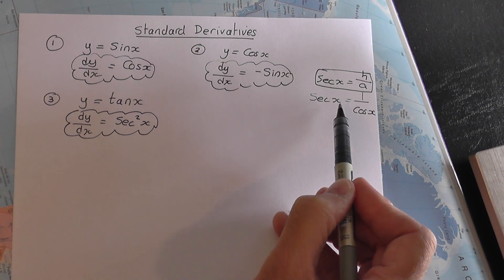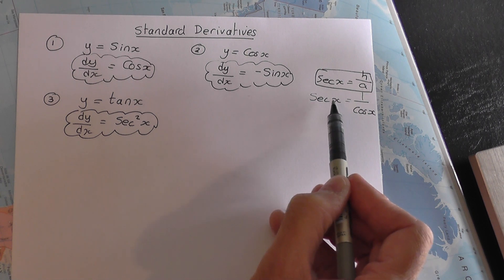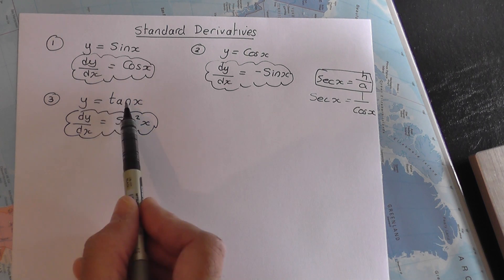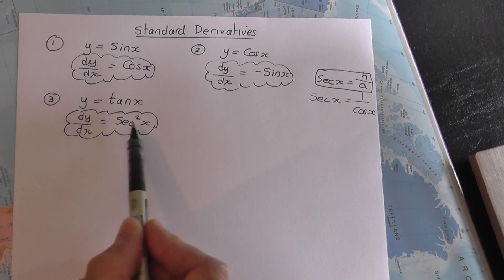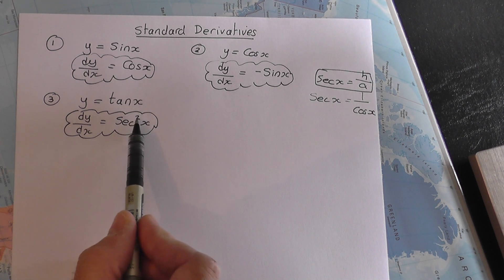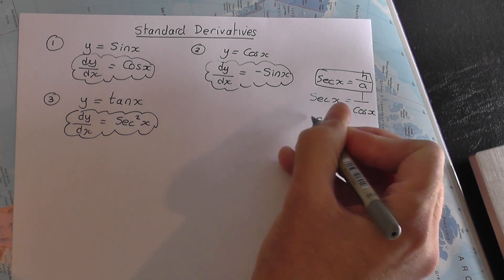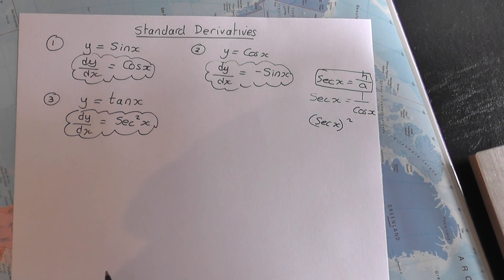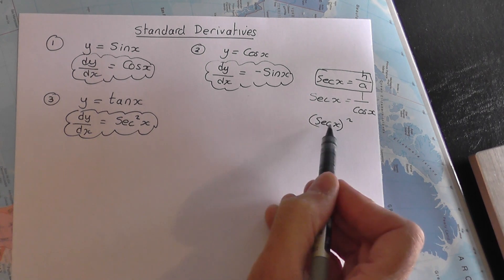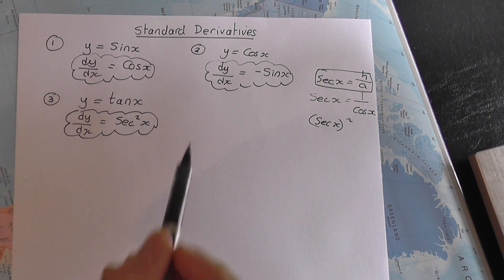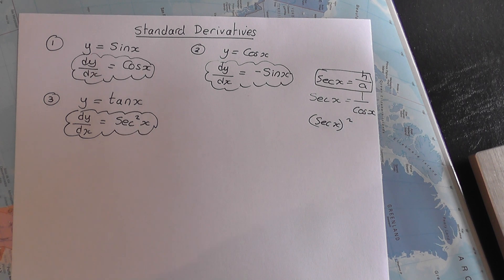But it doesn't matter where that comes from at all for the moment. We're going to be doing that in trigonometry in the future. For now, just learn off by heart: y equals tan x, dy by dx is sec squared x. Notice it's sec squared x. That is really the same thing as sec x all squared, so the whole thing is squared. And the shorthand version of writing that down is sec squared x. This proof from first principles is not needed.